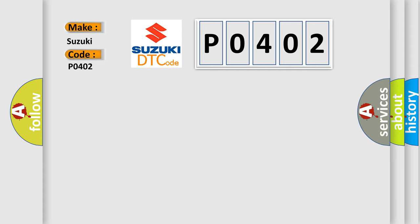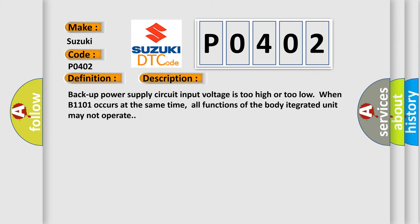The basic definition is: BATP or Supply Malfunction Backup. And now this is a short description of this DTC code. Backup power supply circuit input voltage is too high or too low when B1101 occurs at the same time. All functions of the body integrated unit may not operate.